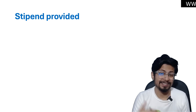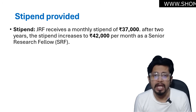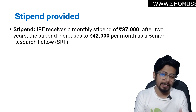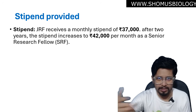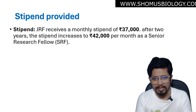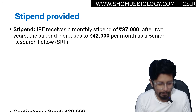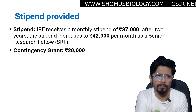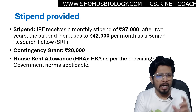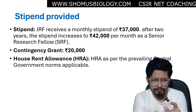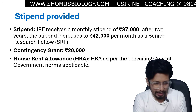If you qualify this examination, there is a stipend provided. For a Junior Research Fellow, the stipend is 37,000 rupees per month, tax-free. After 2 years — subject to performance, interviews, and proper selection — you can be upgraded to Senior Research Fellow at 42,000 rupees per month, tax-free. A contingency grant of 20,000 rupees is also provided for research work such as buying chemicals and infrastructure-related expenditure. House rent allowance is provided as per central government norms, depending on the state and city you are living in.